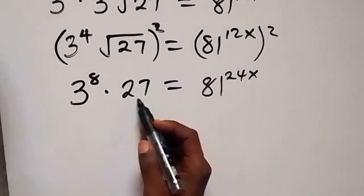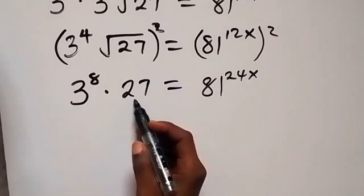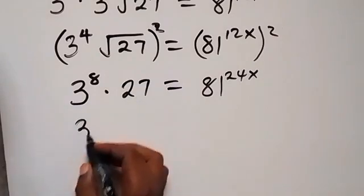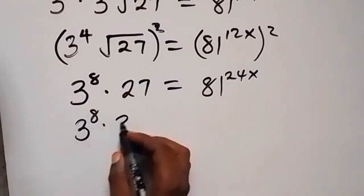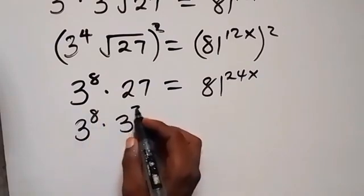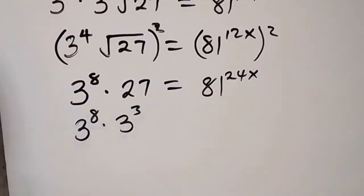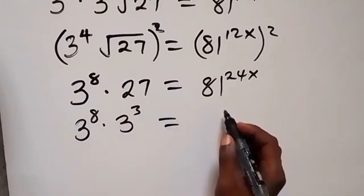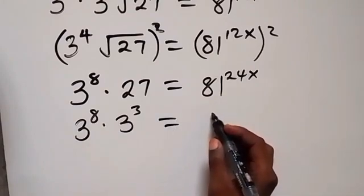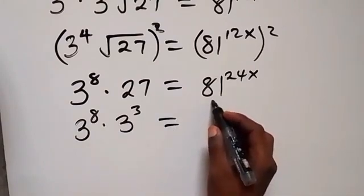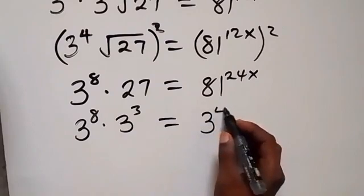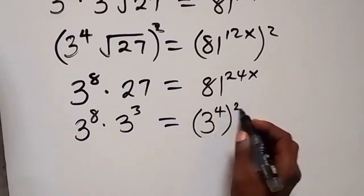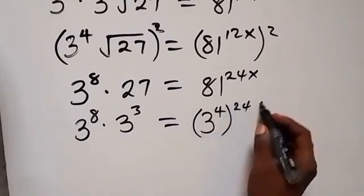If we express this to base 3, we can say this is 3 raised to power 8, times 3 raised to power 3, since 27 can be written as 3³. Then on the right side, 81 equals 3 raised to power 4, so we have 3 raised to power 4 times 24x.